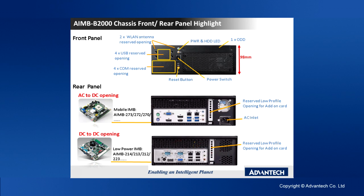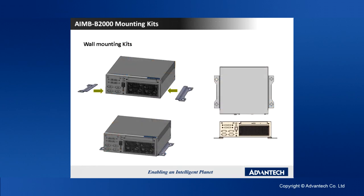One remarkable feature compared to AMB-T1000 is that the AMB-T2000 has a reserved low-profile opening for an add-on card. The enclosure itself is straightforward sheet metal. Due to its size, the optional mounting kit is a wall mount kit, which allows you to mount the system next to or close to the monitor of your application.